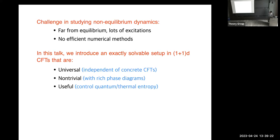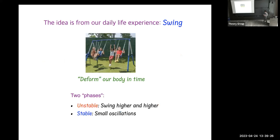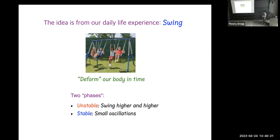The idea is really from our daily life experience — it is from a swing. Everyone knows how to swing in a playground. In general, we need to deform our body in time. There can be two different phases, which I call stable and unstable. Unstable means when you do the swing, you can swing higher and higher — your energy grows in time, you are absorbing energy. For the stable phase, if we don't play very well, we simply oscillate with small amplitude and the energy doesn't grow.